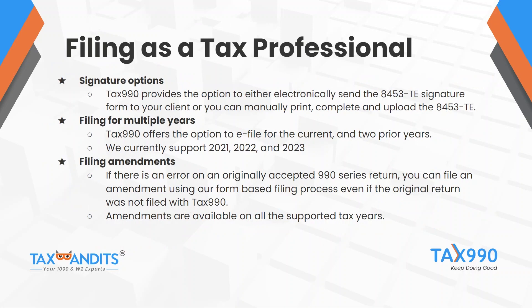As a tax preparer, you are required to obtain a signature from your client that will be sent with the return to the IRS. This confirms that the client has given you permission to complete the return on their behalf. We have streamlined the process for obtaining your client's signature for the 8453-TE form through an e-sign process. The e-sign process allows you to send a link to your client that they can click on and e-sign from their computer or phone. Tax 990 also offers the option to file amendments and prior year returns, including e-filing for the current and two prior years.